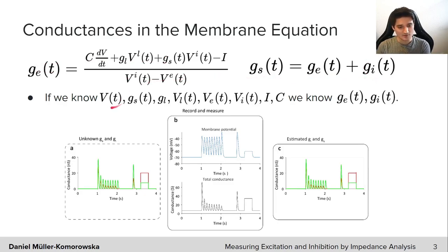So this means if we know the voltage at time t, the total conductance at time t, the leak conductance, the voltage difference between time t and the equilibrium potential of the leak conductance, the excitatory and inhibitory conductances, the current we are injecting during current clamp, and finally the membrane capacitance of the cell, if we know all of these, we also know Ge and Gi. So most of the things on the right here are pretty easy to measure during a standard current clamp recording. So the real issue becomes how do we measure the voltage as well as the total conductance that has caused those membrane potential changes at the same time?